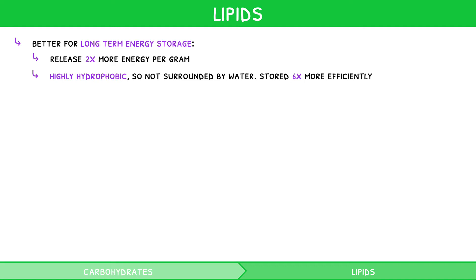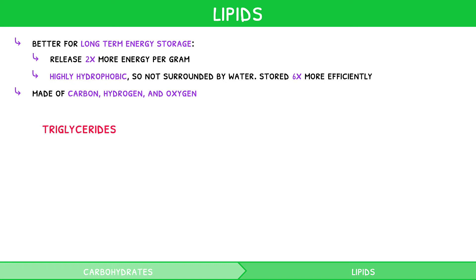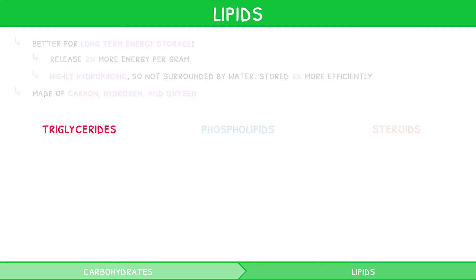But what are lipids? They are a group of molecules made of carbon, hydrogen, and oxygen. They come in three forms: triglycerides, phospholipids, and steroids. Let's take a look at each one now.